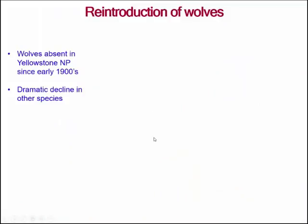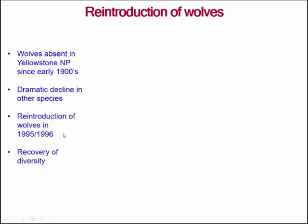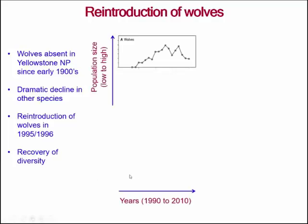Here are some data. The wolves had been absent in Yellowstone National Park since the early 1900s, which led to a dramatic decline in a lot of other species in the park. The wolves were brought back in 1995 and 1996 and there was a steady recovery of diversity. Between 1900 and 2010 the data show an increase in wolves beginning in 1995-96, with a steady increase — some ups and downs — but definitely increased from a zero population.